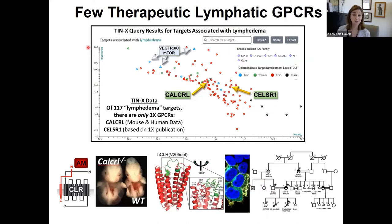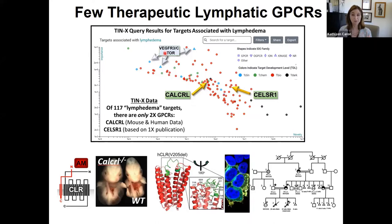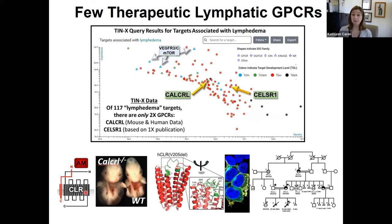There are very few therapeutic GPCRs that target lymphatics. Using the IDG TINX database searching for lymphedema, VEGFR3 is well known as a great target, but only two GPCRs were identified: CLSR1, based on one publication, and CalcRL, a receptor we've been studying for nearly 20 years. Deletion of CLR, the receptor, RAMP2, its activity-modifying protein, or its ligand adrenomedullin results in embryonic lethality in mice.